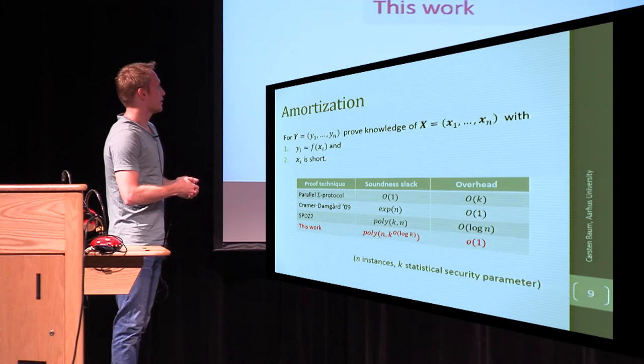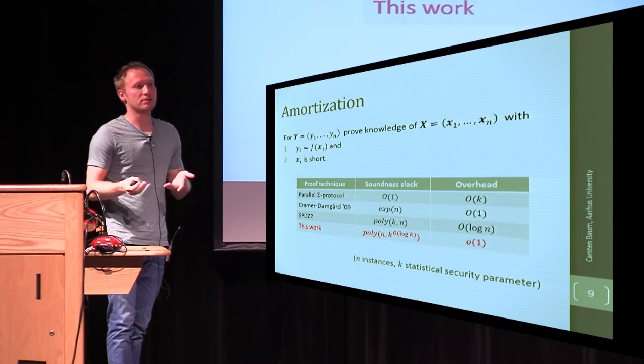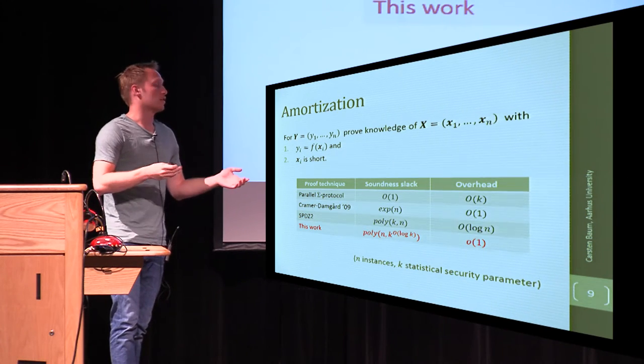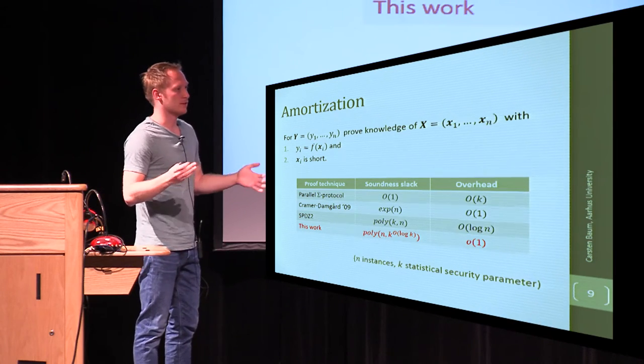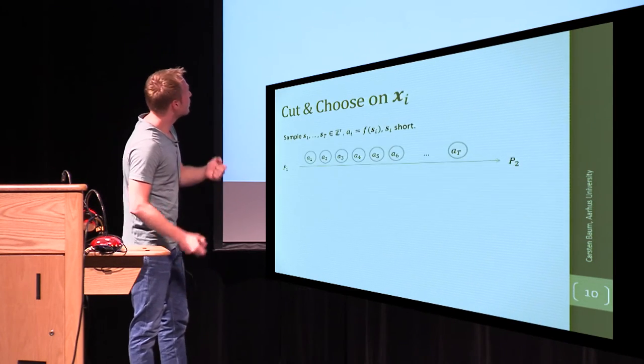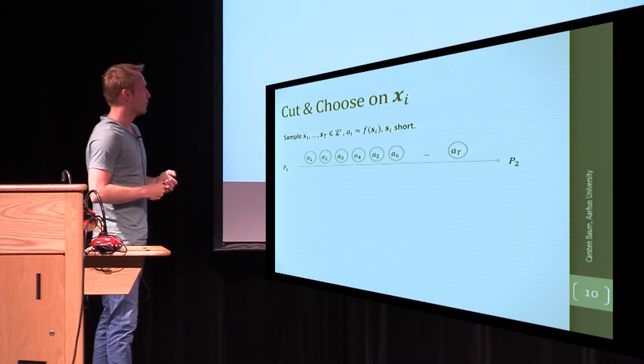And in this work, we show that by having slightly super-polynomial soundness slack, we can actually go down to constant overhead again. The reason why we care about this is, this overhead means additional messages we have to send in an MPC protocol if we use zero-knowledge proofs, and the less we send, the better for MPC in the real world.